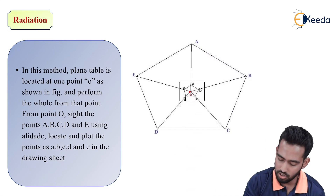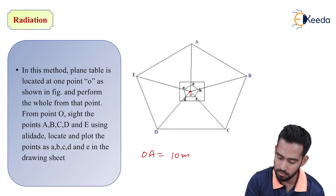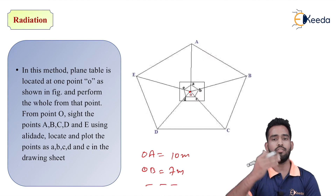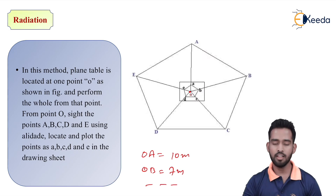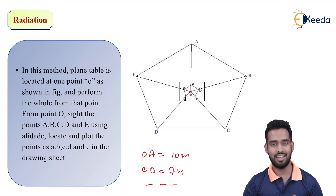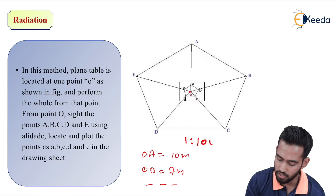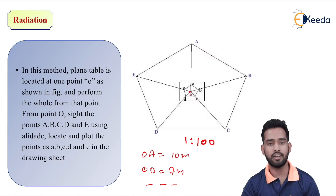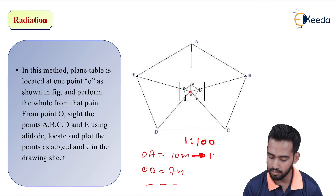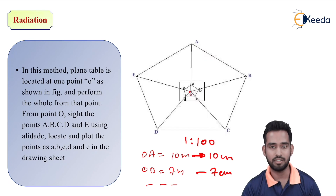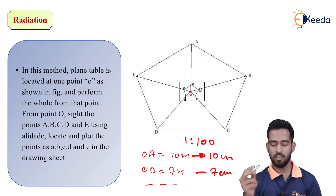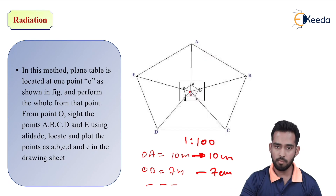We have to find out distance OA. Suppose the distance OA on ground is 10 meters, OB is 7 meters, and so on. We have to calculate the actual distance on ground first. After knowing the actual distance, we have to convert this distance into a scale and plot these ray lines on the sheet. For example, using scale 1 is to 100, converting 10 meters into 10 centimeters, and 7 meters into 7 centimeters. Using the scale, we measure from O.